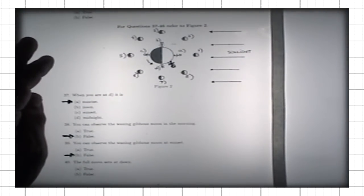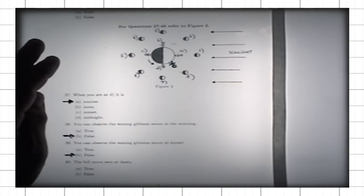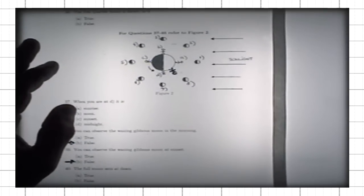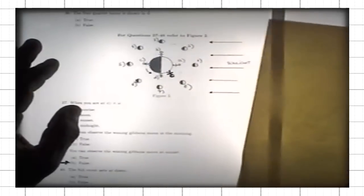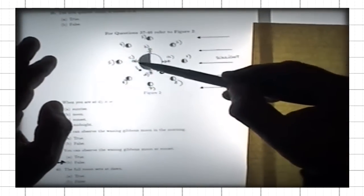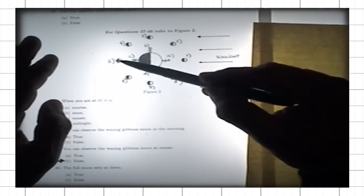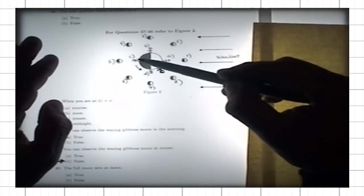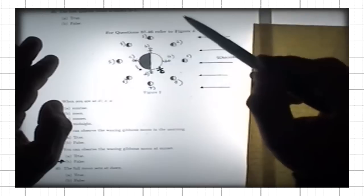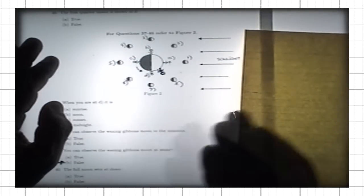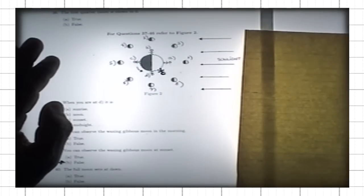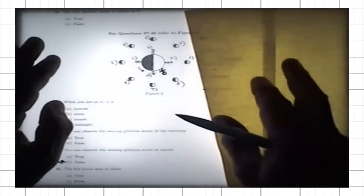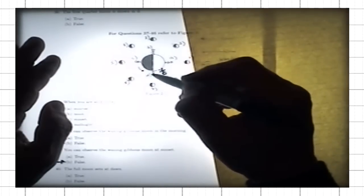Now, when does the full moon set? That is, when do you stop seeing the full moon? The best way to analyze this is to look at what you see at different positions. At midnight, when you are at position C, the full moon is overhead — you can clearly see it. In the interval of time between midnight and dawn or sunrise, the observer's horizon keeps the full moon visible.